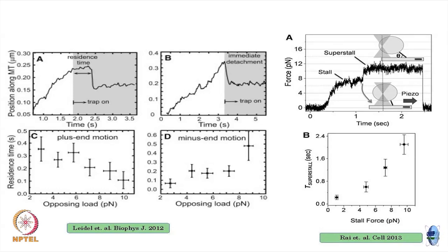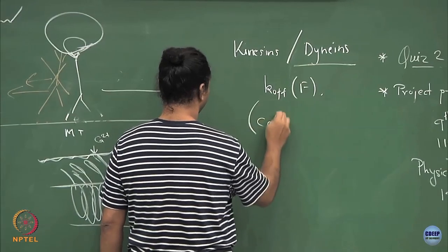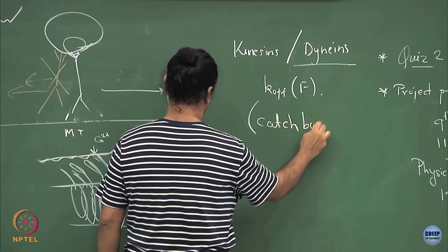On the other hand, dyneins show very different behavior — in fact the opposite. The more you pull on dynein, the more time it spends bound to the filament. The more the opposing force, the more tightly it stays bound. This is very counterintuitive; most motors do not behave like this. This bond that strengthens under an opposing force has a special name: it is called a catch bond.